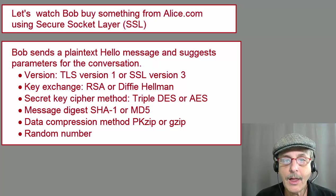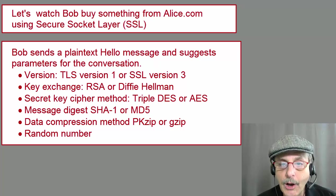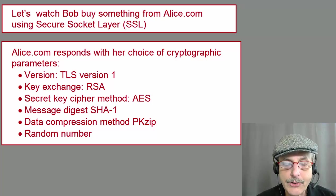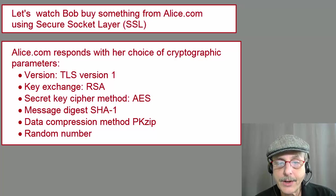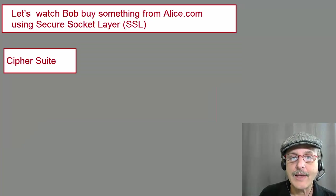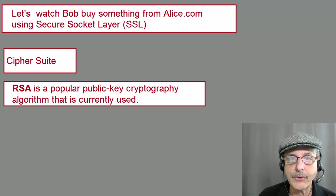They also choose a data compression method of either PK-ZIP or G-ZIP, and a random number is chosen. Alice.com responds with her choice of cryptographic parameters: let's use TLS version 1, a key exchange of RSA, a secret key cipher method of AES, a message digest method of SHA-1, and a compression method of PK-ZIP, along with another random number. This agreement is called a cipher suite — these are the parameters they will communicate with from now on. RSA is a popular public key cryptography algorithm that is currently used.